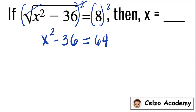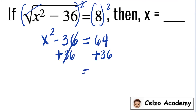Isolating the variable x on the left, we need to do the inverse of minus 36, which is adding 36 to both sides. Negative 36 plus 36 is 0, so the left side is only x squared. The right side is 64 plus 36, which is 100.